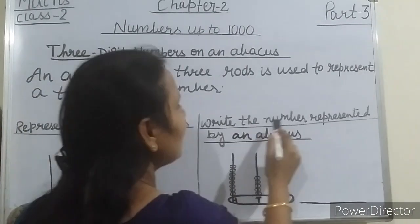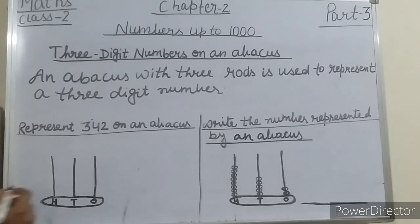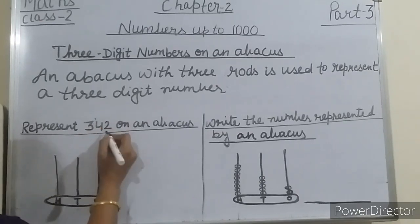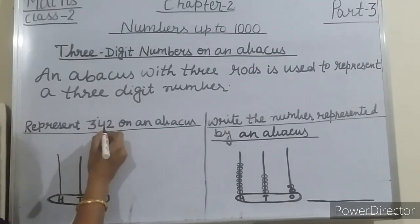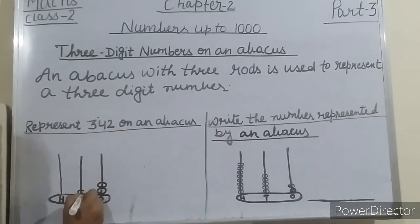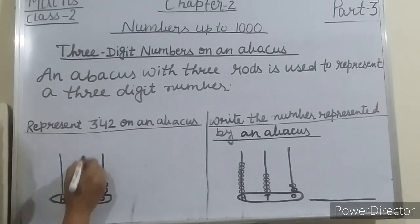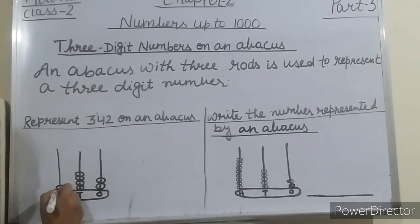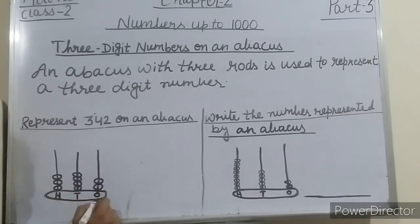The second example is: write the number represented by an abacus. So here, 342 — how many ones? Two ones, so here we will draw two beads. At the tens place, four — so we will draw four beads. And at the hundreds place, three — so we will draw three beads. Now read this students: three hundred forty-two.